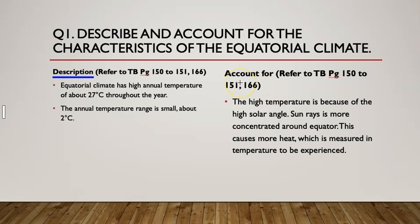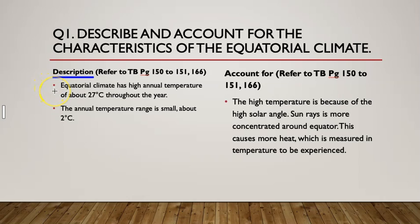When attempting this type of question, please take note: you must always start with the description. You can choose to answer whether the characteristic is temperature or rainfall — it's your choice. In this review, I am using temperature first. You must describe the equatorial temperature characteristics first. For example, it's a high temperature of about 27 degrees Celsius, and the annual temperature range is small, about 2 degrees Celsius. You must use data to support your description.